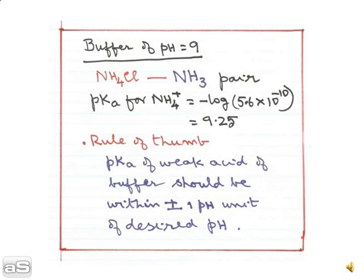So by adjusting again the concentration of the acid and the base we can get the pH of 9. As a rule of thumb we have to know that the pKa of the weak acid of the buffer should be within plus or minus 1 pH unit of the desired pH.